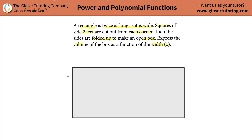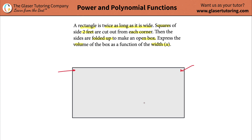Before we get into the mathematics of it, let's just visualize what's going on. You've got a rectangle on the page — two dimensions. Somehow you've got to turn this two-dimensional object into a three-dimensional object. You do it by starting to cut out some of the corners — you cut little squares out in the corners.